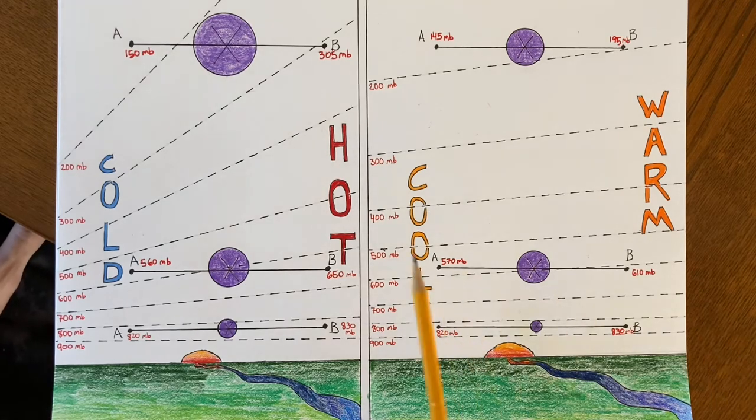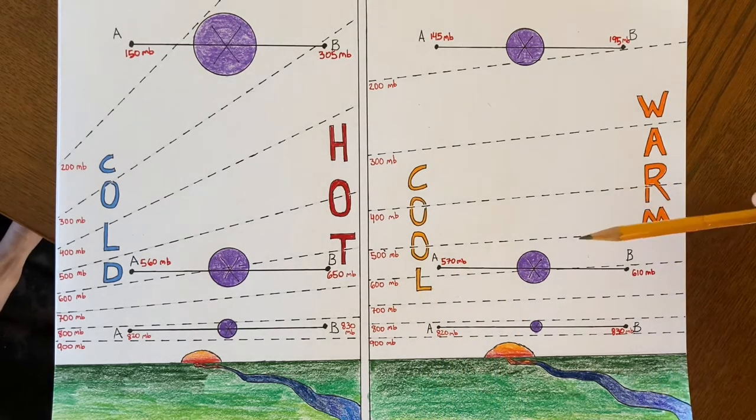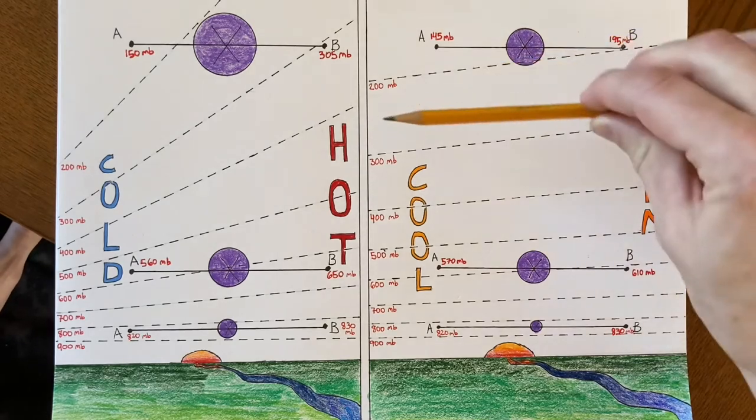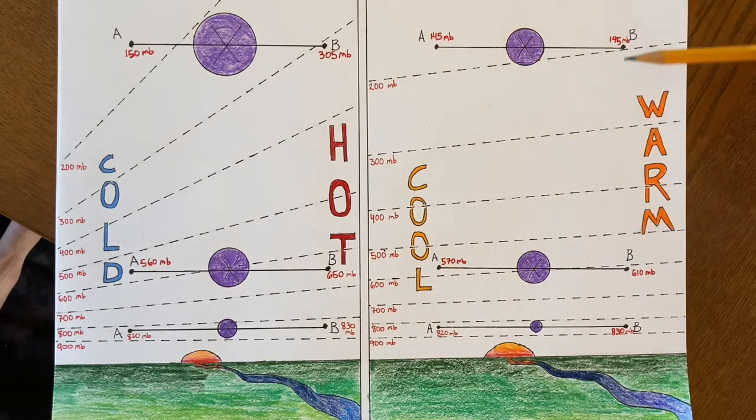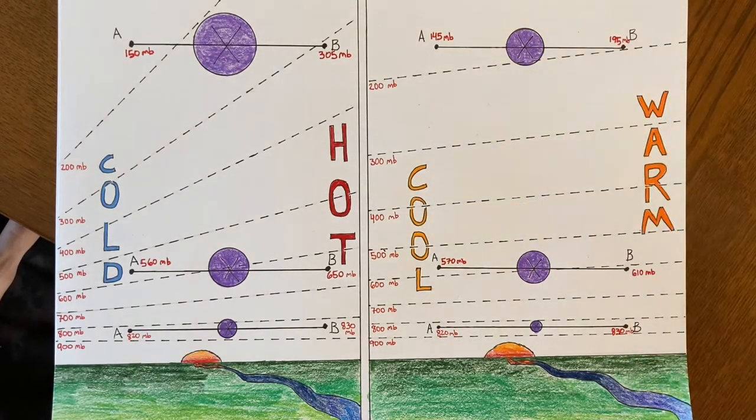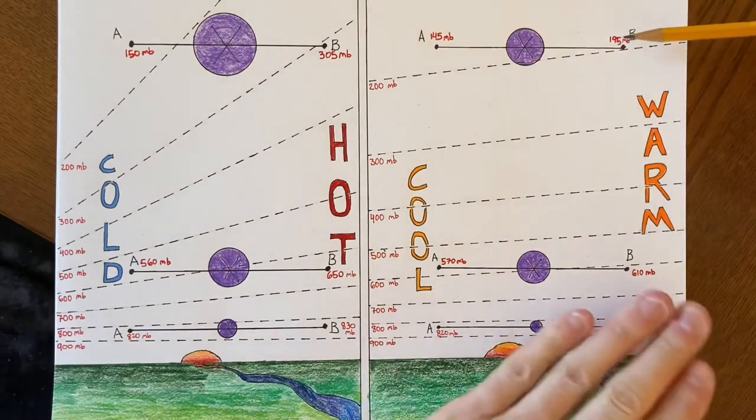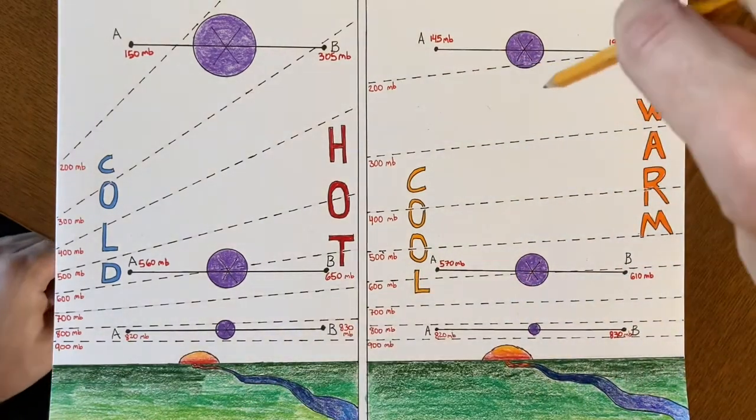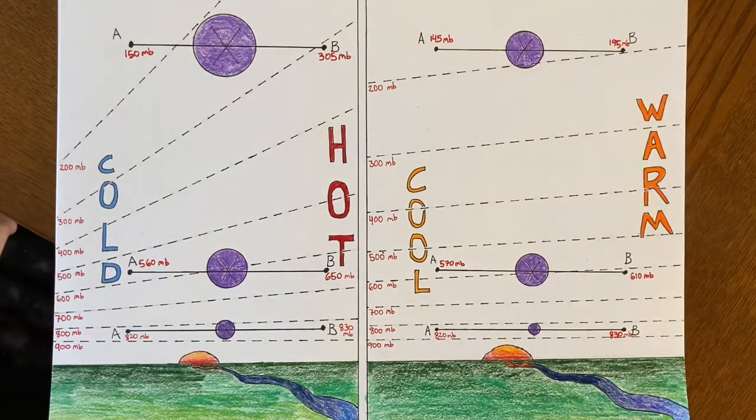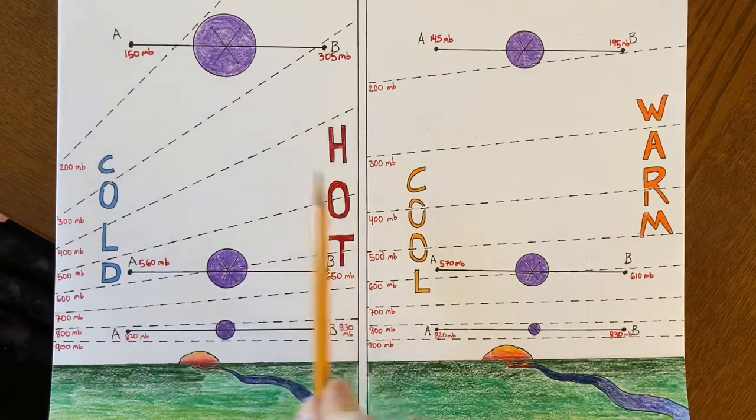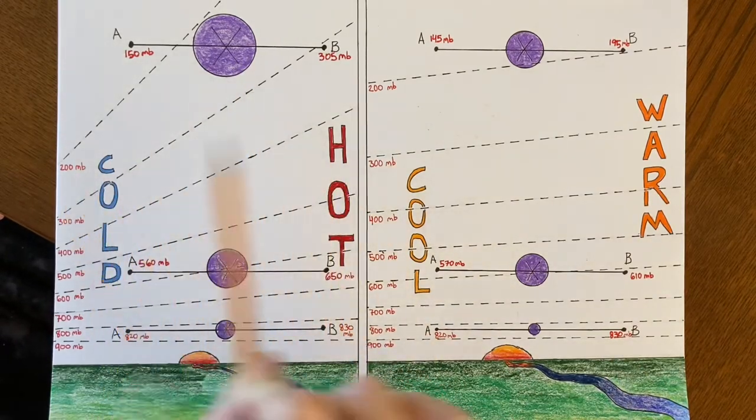But if we've got cool and warm air here, the warm air is expanded a little bit more, the distance between the pressure levels is a little bit greater than in the cool air mass. So there is some sloping of the pressure lines. And as you go from B to A, there is a pressure difference that's going to cause wind to blow and then be deflected to the right into the page. But it's not as strong as it was with the stronger temperature difference, hot and cold.